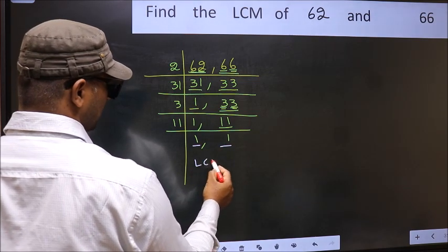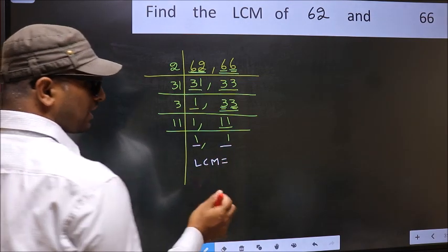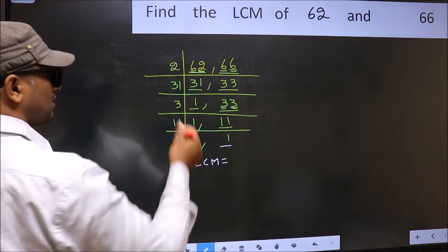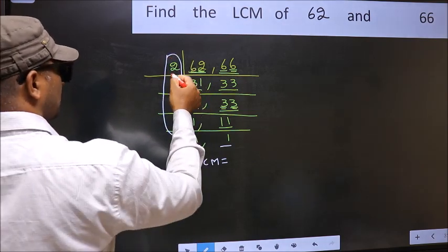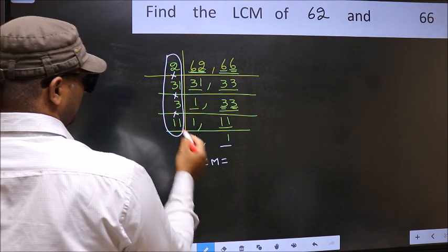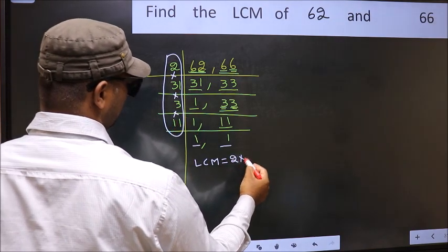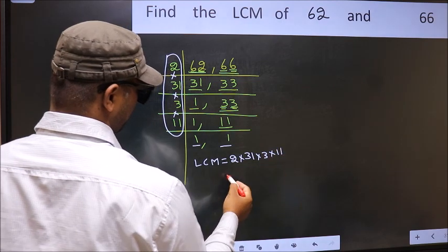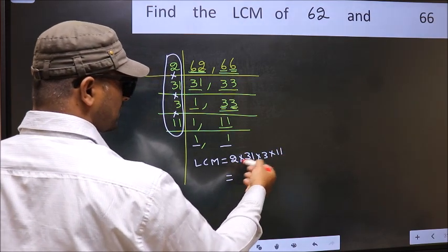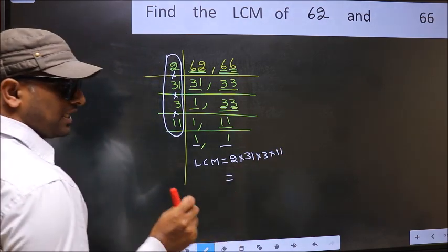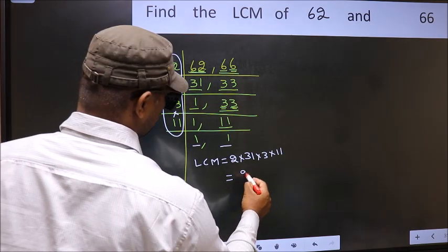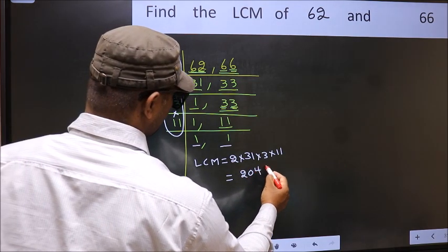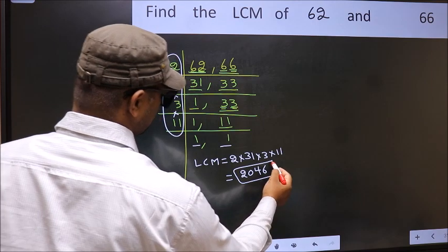So, our LCM is, LCM is the product of these numbers. That is, 2 into 31 into 3 into 11. When we multiply these numbers, we get 2046 is our LCM.